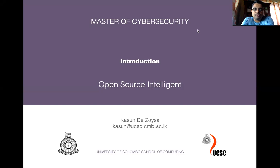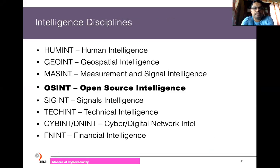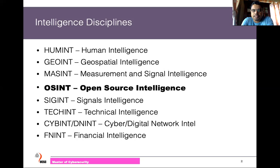Open-source intelligence refers to intelligence gathering disciplines. In open source, the term refers to information and intelligence available openly. There are several intelligence disciplines related to military purposes and state intelligence.